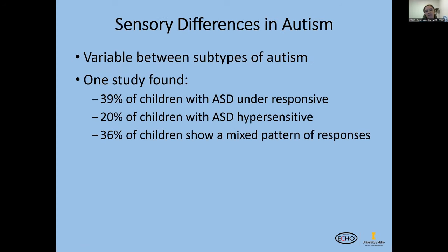Sensory differences in autism: this affects a lot of different areas and diagnoses. One study found 39% of children with autism were under-responsive — meaning it took a lot more before they registered sensory input, whether noise, temperatures, or similar stimuli. 20% of children with autism were hypersensitive, meaning it didn't take much before they were affected by something. And 36% of children showed a mixed pattern of responses.